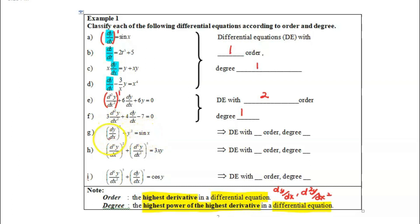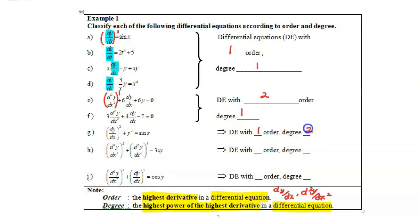The only derivative found in this equation is dy over dx, which is the first derivative. So we have order 1. But its power is 2, so the degree is 2.